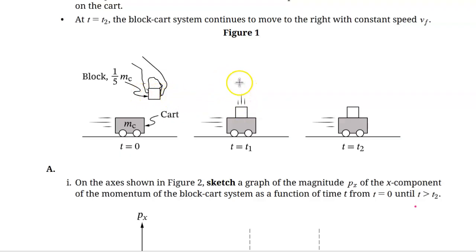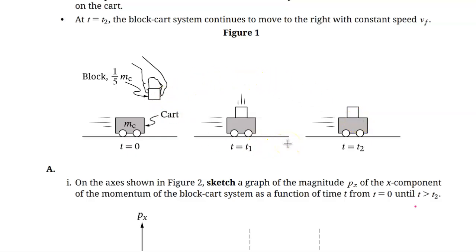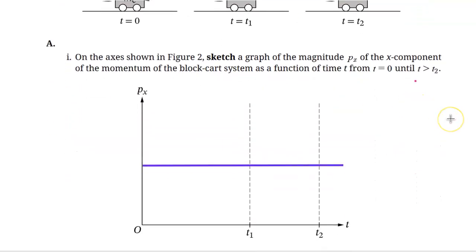Then the block is dropped. Although the block slows down the cart, the cart also speeds up the block. And because there's no external net forces, the momentum of the cart-block stays the same. Afterwards, the cart-block has the same momentum because there's no external net forces horizontally. So throughout this whole situation, there are no external net forces horizontally, so the momentum of the cart-block system stays the same. On our momentum-time graph, we have a horizontal line indicating that the block-cart system momentum is constant throughout the whole time.